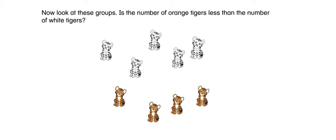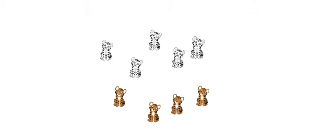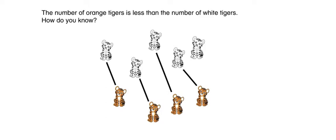Now look at these groups. Is the number of orange tigers less than the number of white tigers? You can find out by matching. The number of orange tigers is less than the number of white tigers. How do you know?